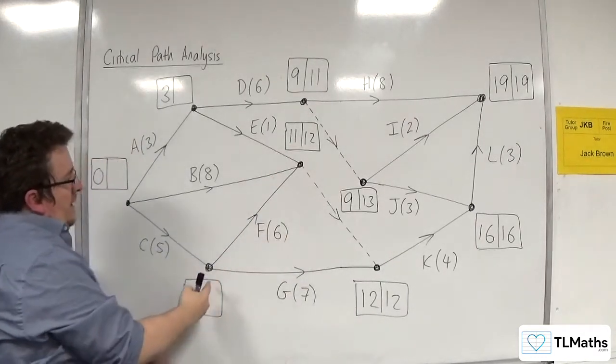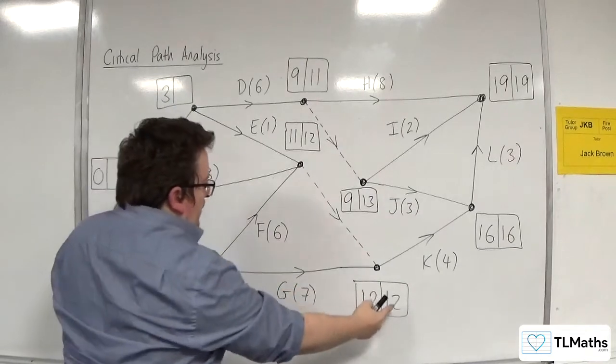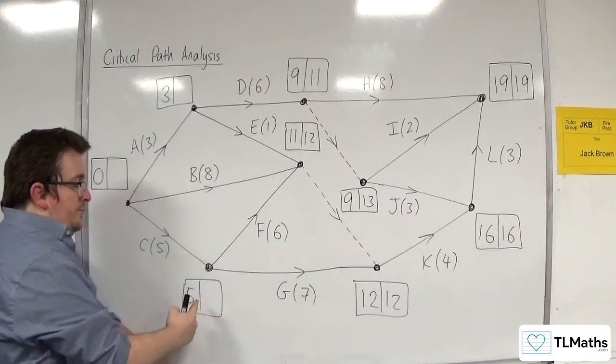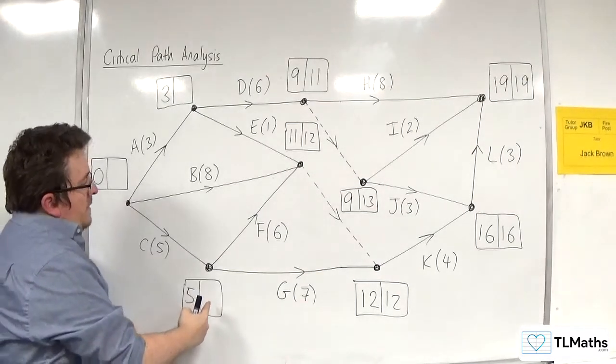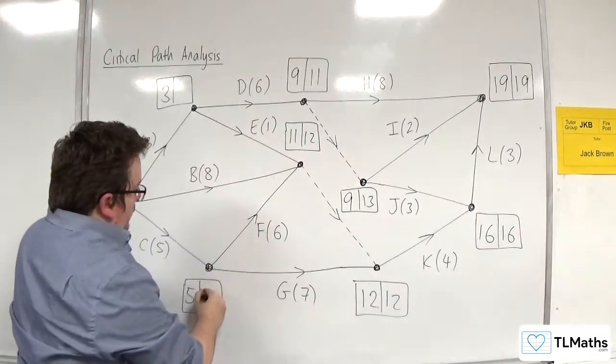So now I can work out this one. 12 take away 6 is 6, or 12 take away 7 is 5. So we've either got 6 or 5, so that's got to be 5.